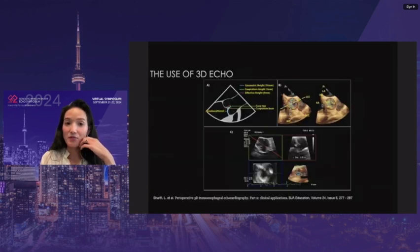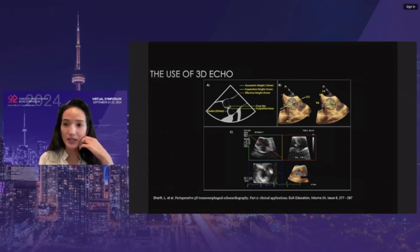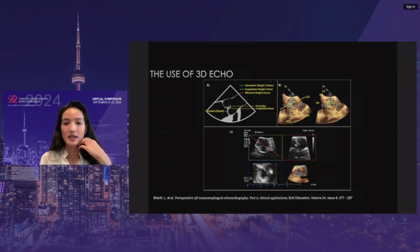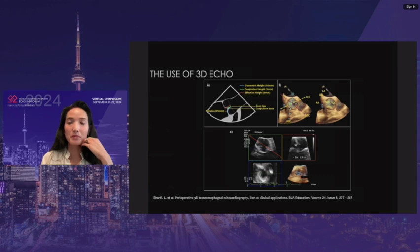Similarly, 3D echo can be used particularly if your center does a lot of aortic valve repairs — measuring geometric height, coaptation height, commissural height for bicuspid valves, allowing the surgeon a sense of what they have to do in repairing the valve and the probability of repair success.